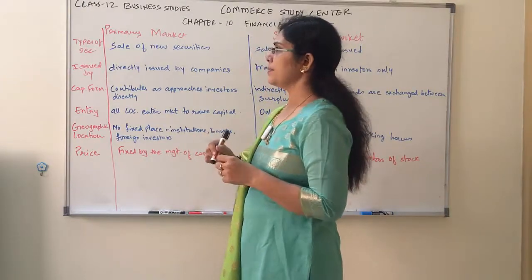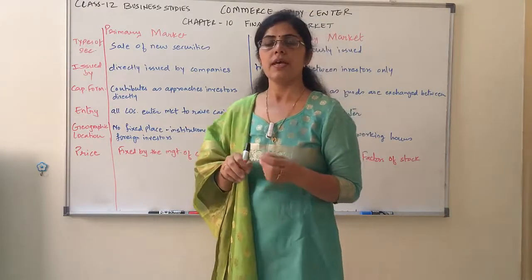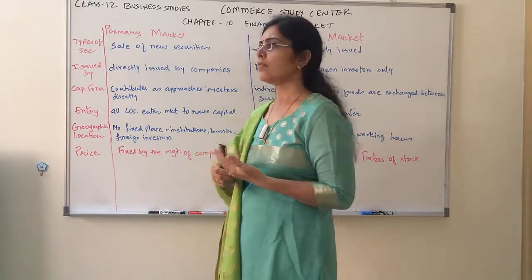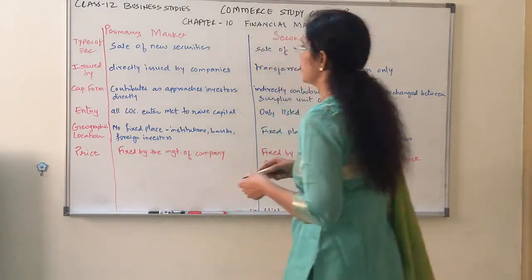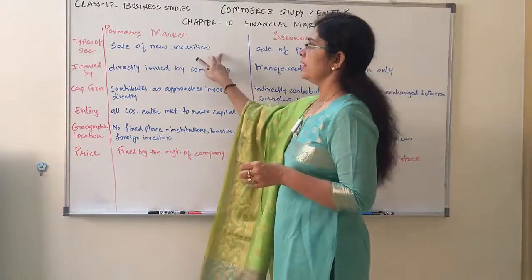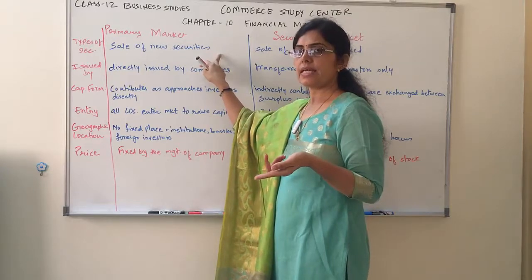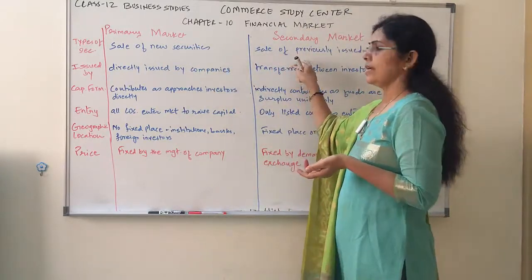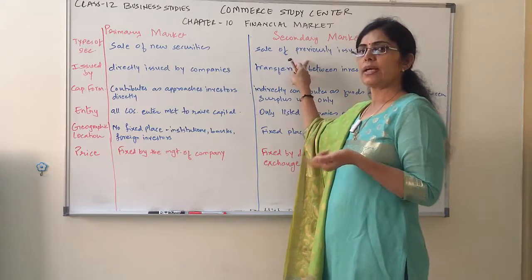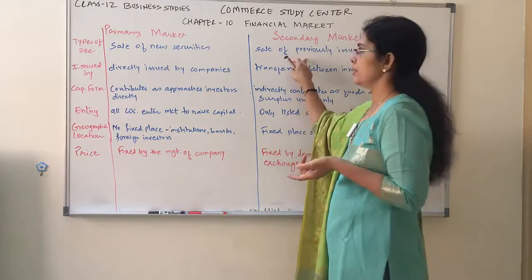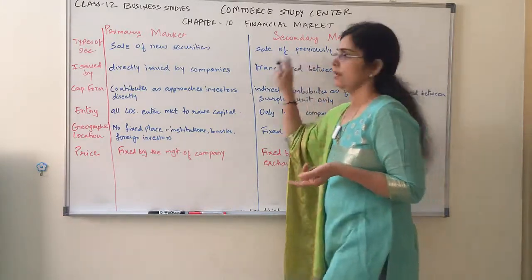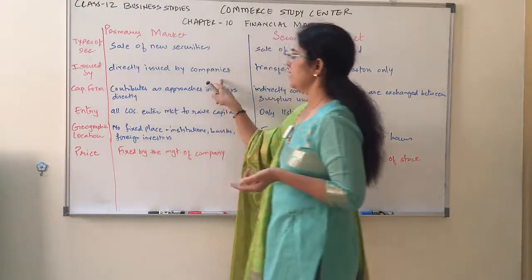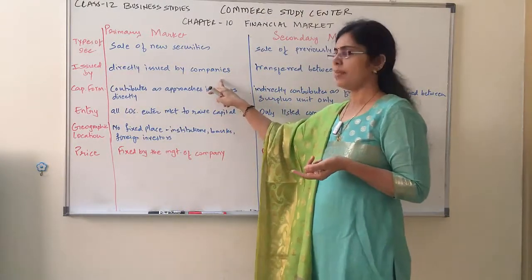Now, when we say types of securities, in primary market what is the type of security and in secondary market what is the type of security? In the primary market, sale of new securities takes place. Whereas, in the secondary market, the type of security is previously issued — or you can say second-hand securities are being sold. It is issued directly by companies to the general public.